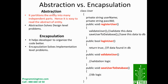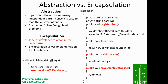The next point is encapsulation — it helps the developer organize the code better. Abstraction organizes the design by dividing the code into different partitions, whereas encapsulation organizes the code better at the implementation level.